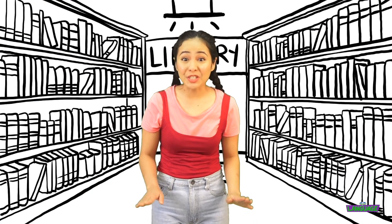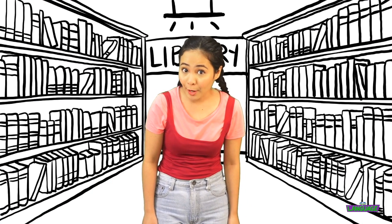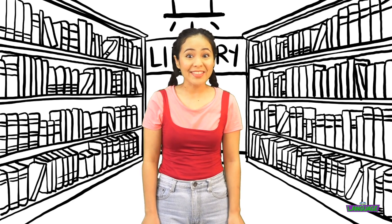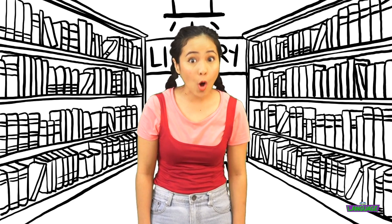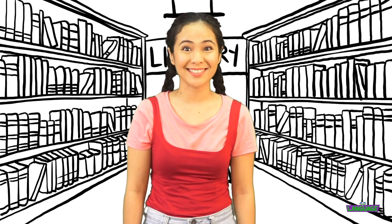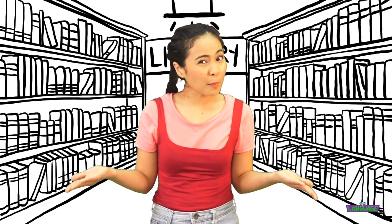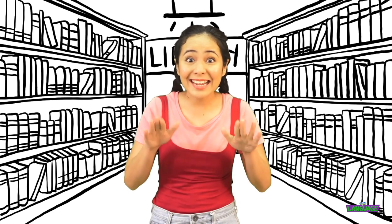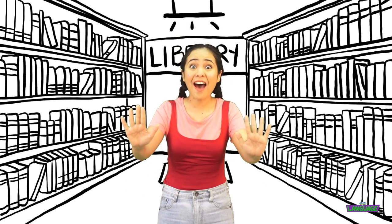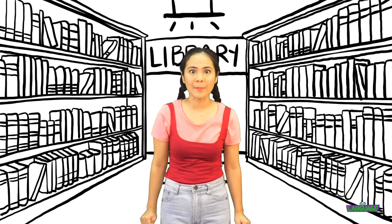'These are' is used when we are pointing out more than one person or object that are near or close to us. What if we are pointing out a person or an object that is far from us?